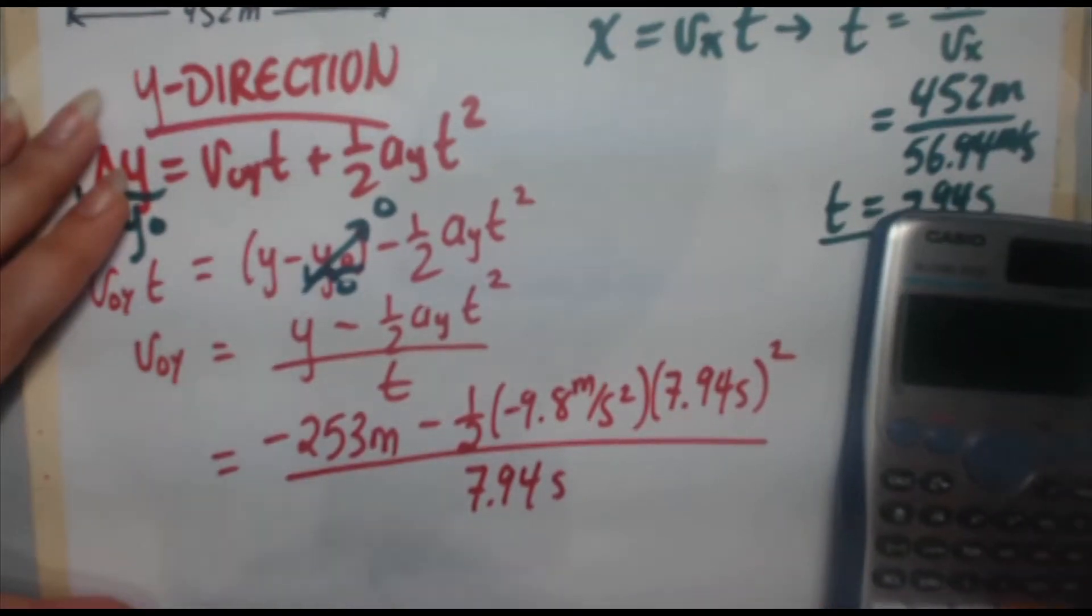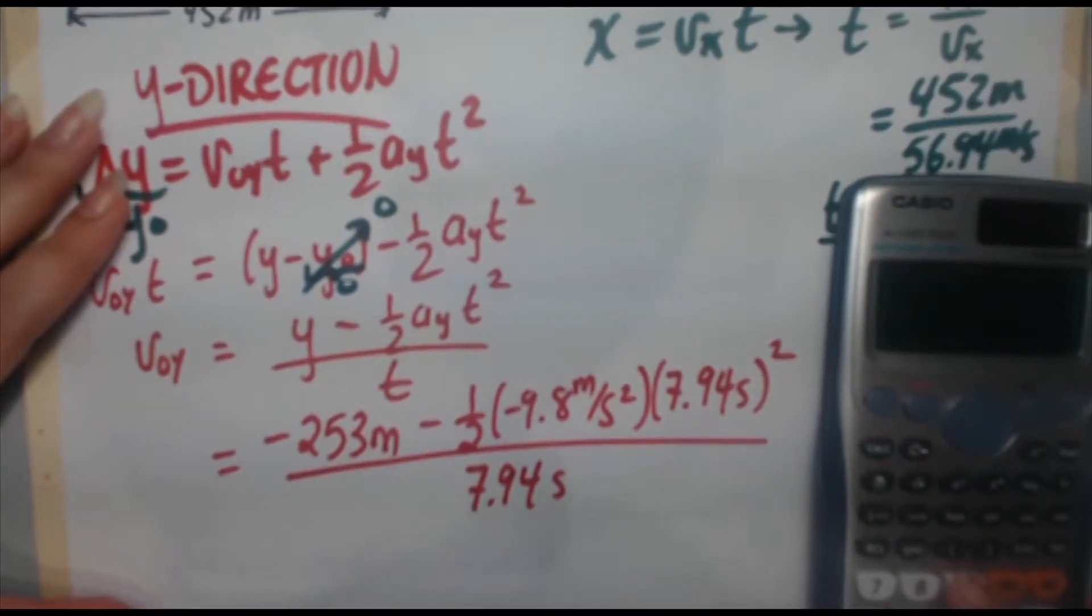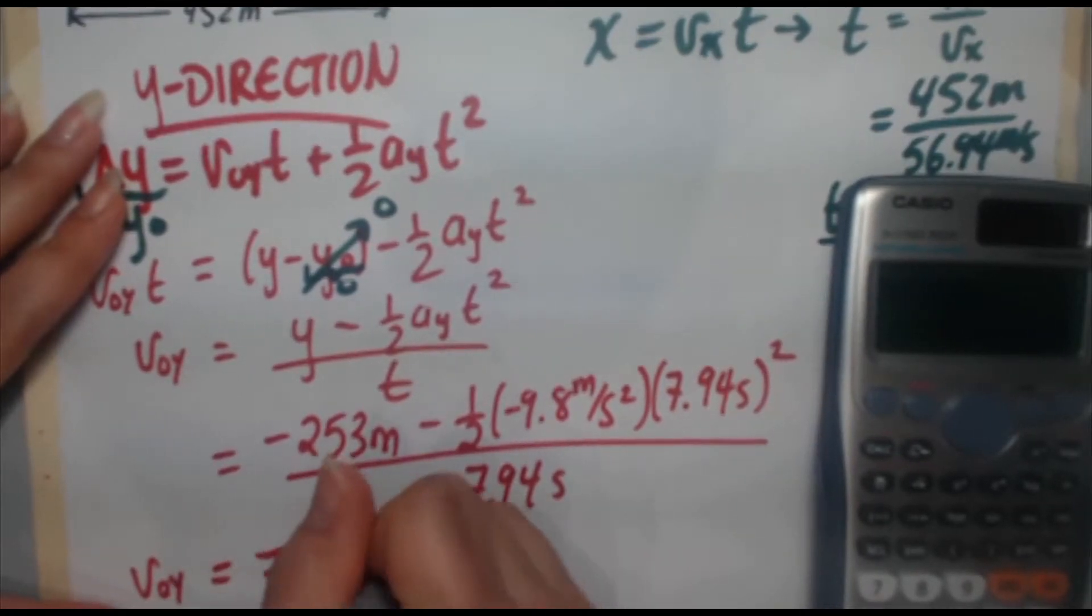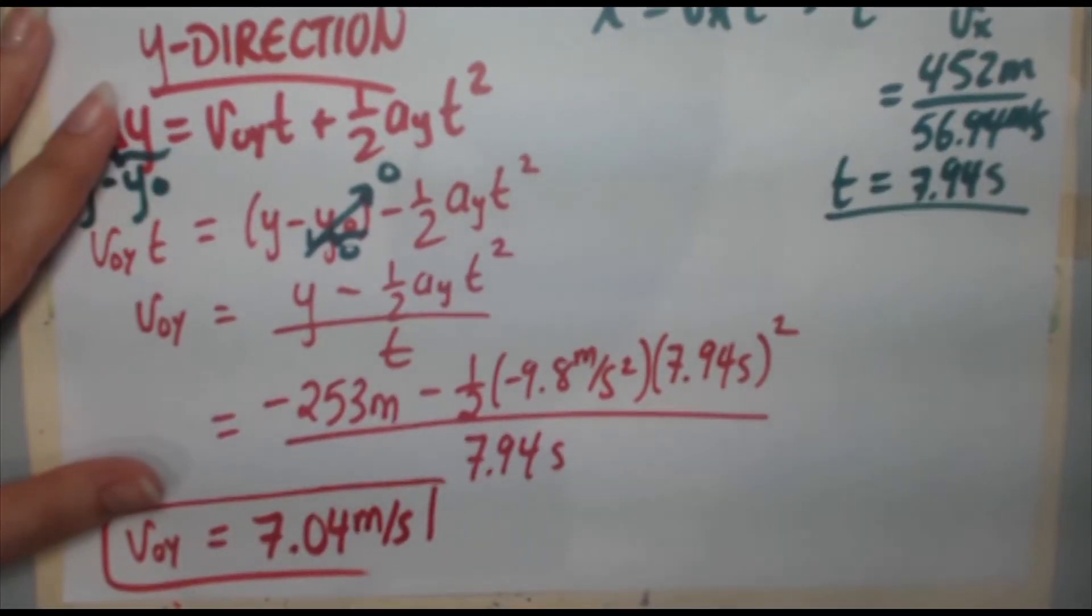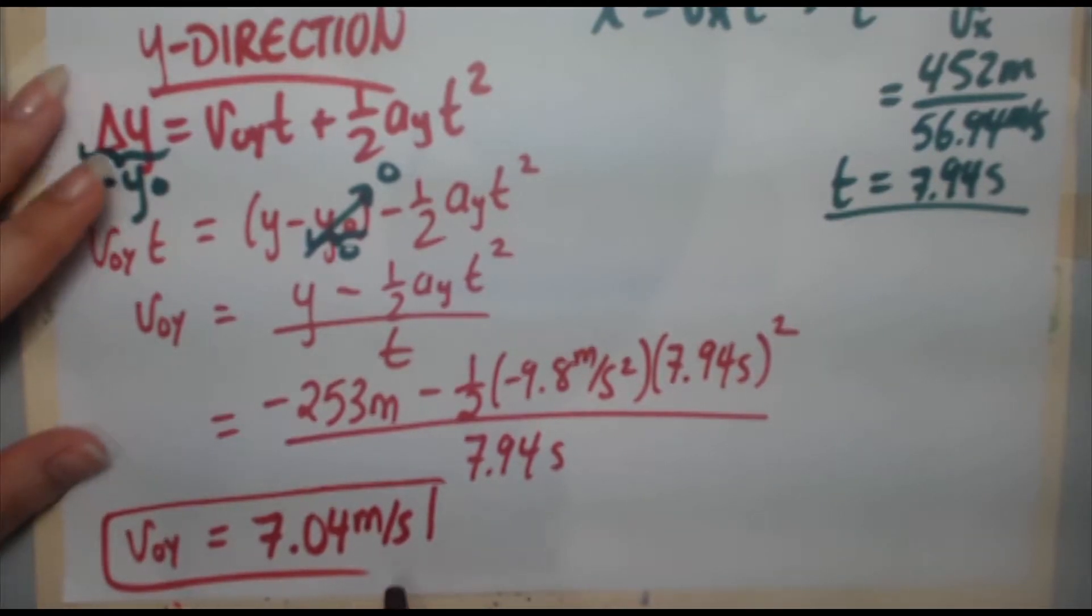And when you calculate that out, let's do that on the side. I'm going to do my 0.5, 9.8, the two negatives are going to cancel themselves out, times 7.94 squared. And if you take negative 253, you have to add that to it divided by 7.94. So we get 7.04 meters per second.